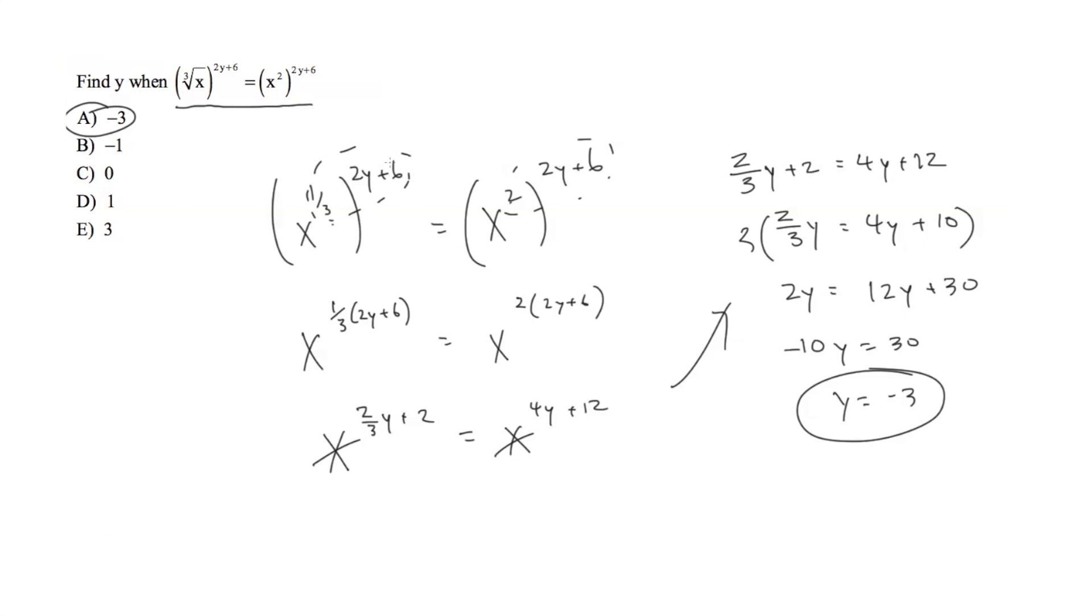Also, make it easier on yourself. Don't do any logs and complicated stuff like that. Just drop the bases as long as they're equal. We can only do that since in this case they were both x.